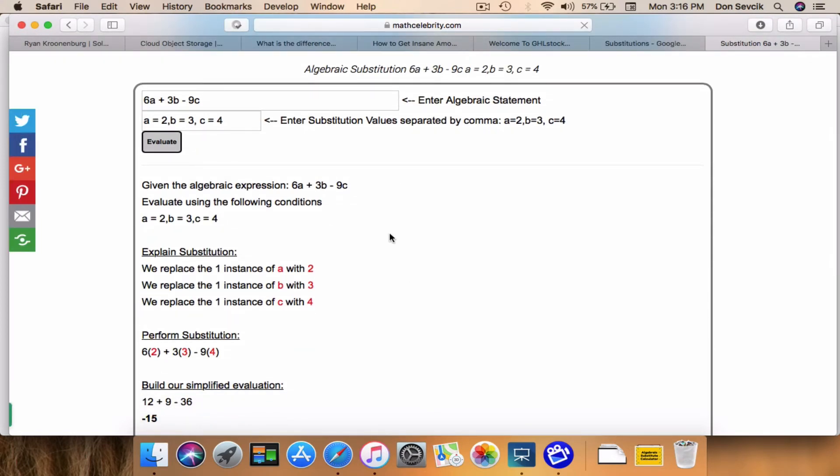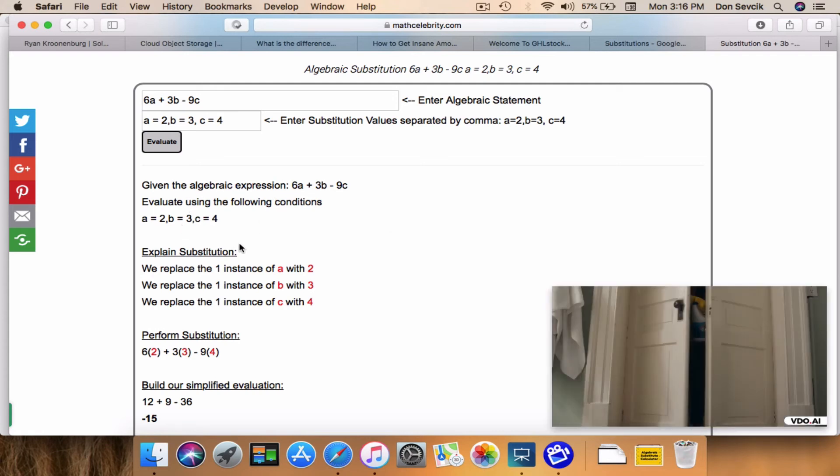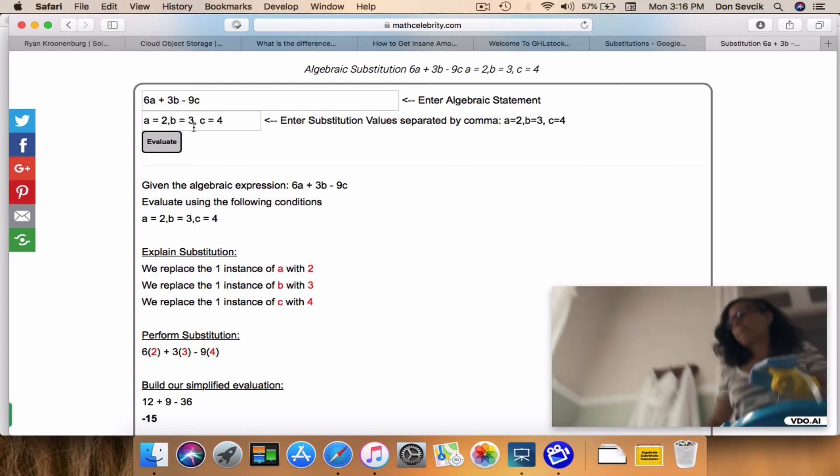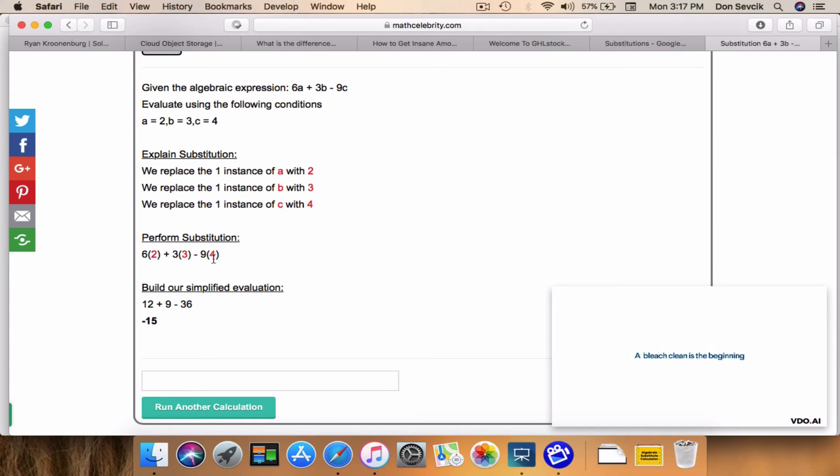And this is going to run through your problem and evaluate the algebraic substitution. So we're substituting A with 2, B with 3, C with 4. And we do that down here, simplify, and we get negative 15.